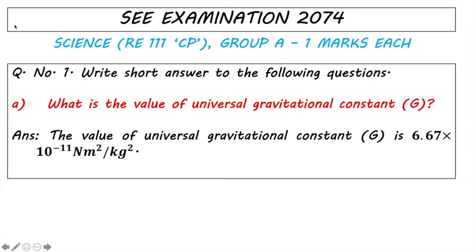Hello, SEE Examination 2074, Science Group A, Question Number 1: Write short answer to the following questions. There are 15 questions, A through O, and each question carries one mark. Let's start with